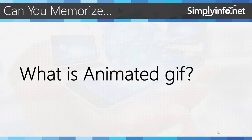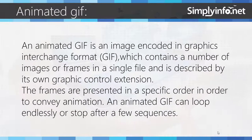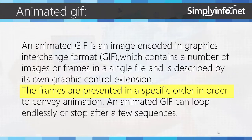An Animated GIF is an image encoded in Graphics Interchange Format, which contains a number of images or frames in a single file and is described by its own Graphic Control Extension. The frames are presented in a specific order in order to convey animation. An Animated GIF can loop endlessly or stop after a few sequences.